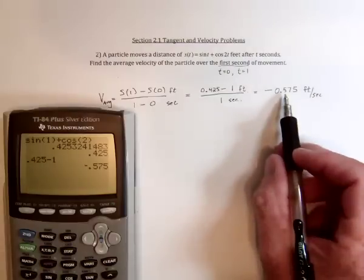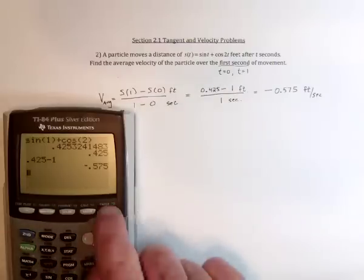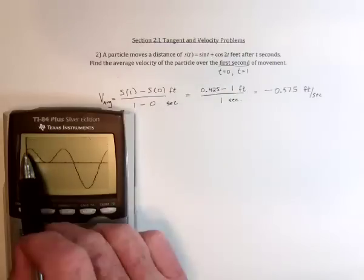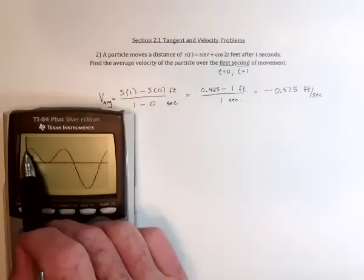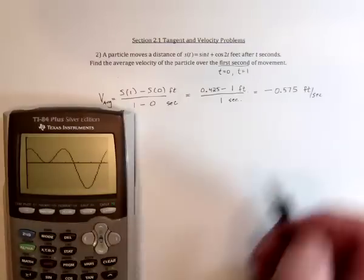So it's traveling about a little more than half a foot every second. But the negative says that it's going down. And sure enough, as it goes from here, the beginning, to when time equals 1 right here, then that would be going down.